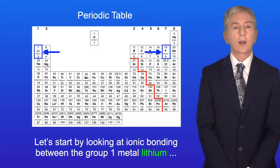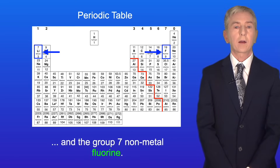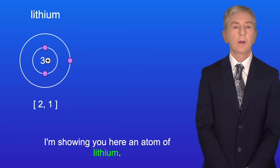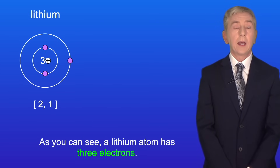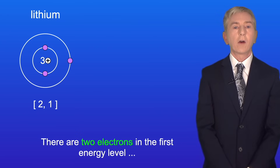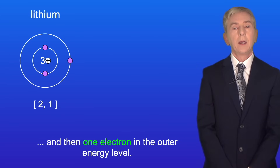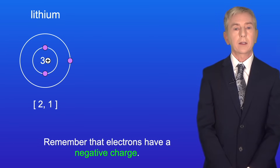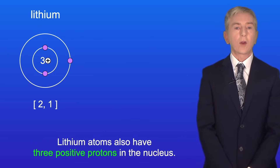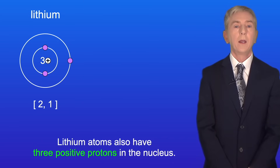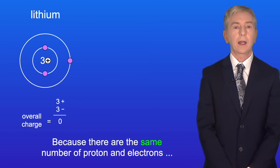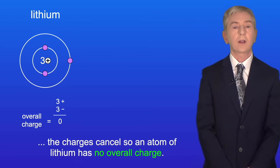Let's start by looking at ionic bonding between the group one metal lithium and the group seven non-metal fluorine. A lithium atom has three electrons: two in the first energy level and one in the outer energy level. Remember that electrons have a negative charge. Lithium atoms also have three positive protons in the nucleus. Because there are the same number of protons and electrons, the charges cancel, so an atom of lithium has no overall charge.